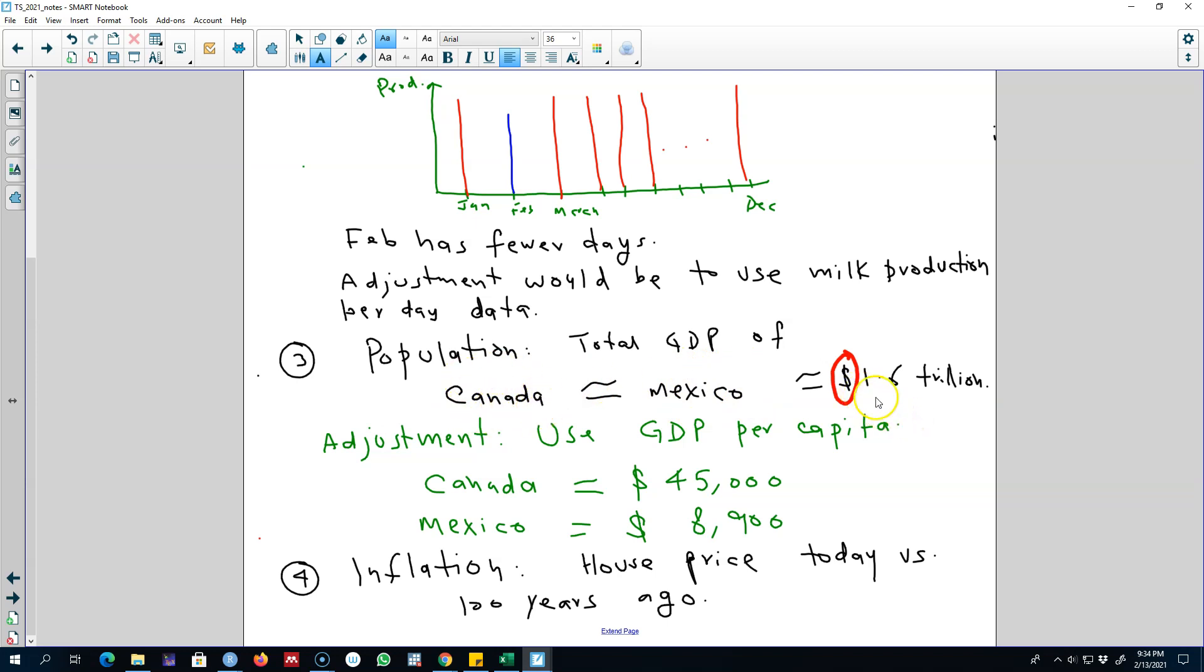That is, this 1.6 trillion dollars worth of GDP is shared among more people in Mexico as compared with Canada. So we have to make this adjustment and divide this total GDP by the number of people who will be sharing this GDP.